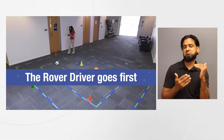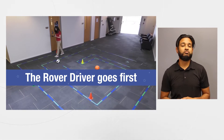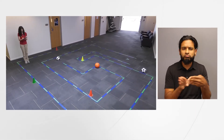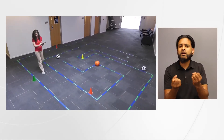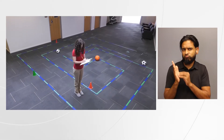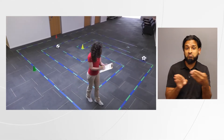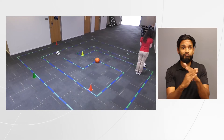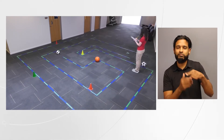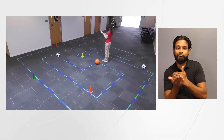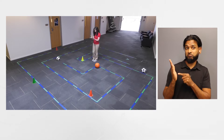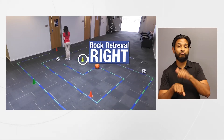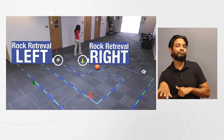The rover driver will walk through the course first, counting the number of steps and listing the turns needed to guide the rover through the course. The cones on the course, or other objects you choose, are rock samples that can be collected if the rover driver has included it in their directions.